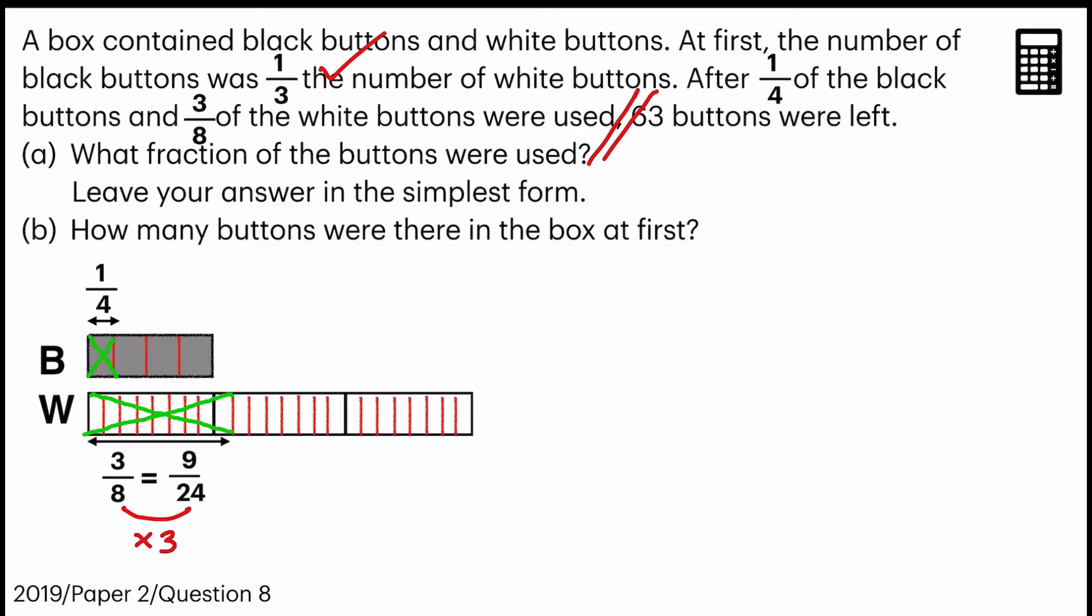Now let's continue our story. After all the green portion were used, 63 buttons were left. So all these, one, two, three, plus all of these is equal to 63. Okay.